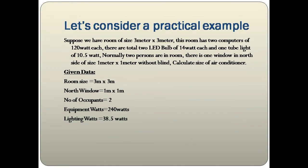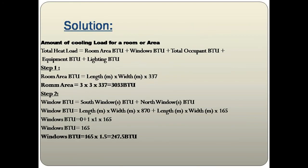There is one north-facing window of size 1 m × 1 m without blinds. Calculate the size of the required air conditioner. Summary of given data: room size = 3 m × 3 m, north window = 1 m × 1 m, number of occupants = 2, total equipment wattage = 240 W, total lighting wattage = 38.5 W.